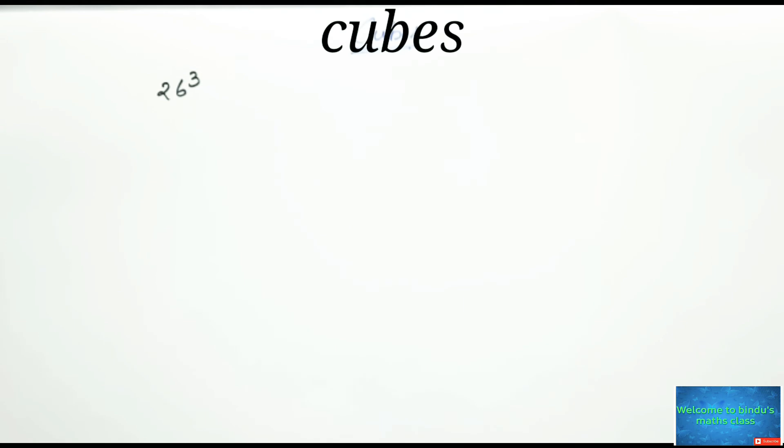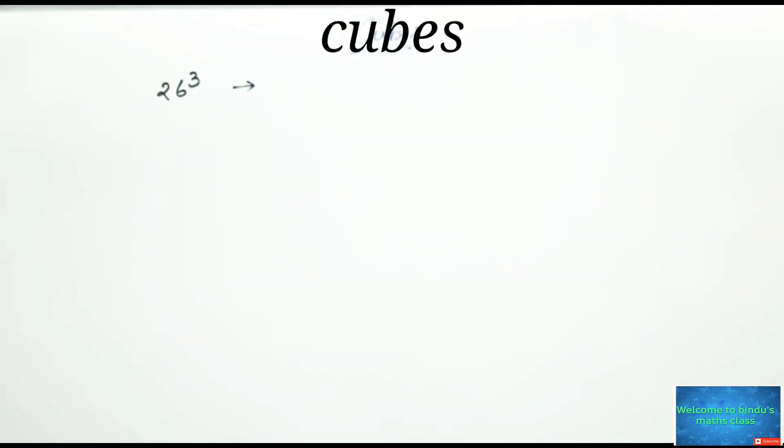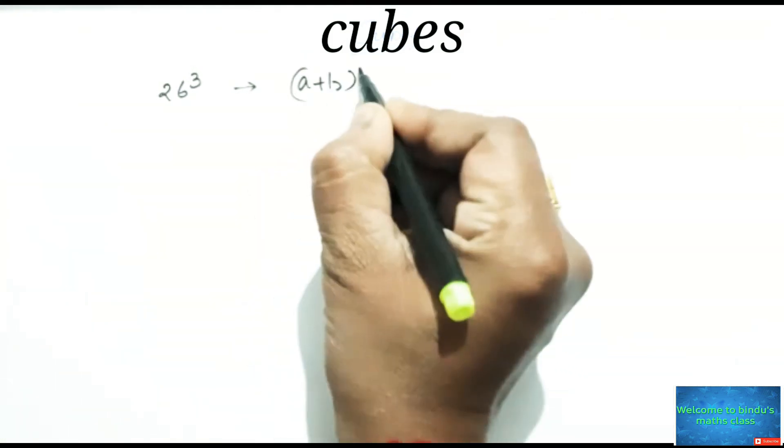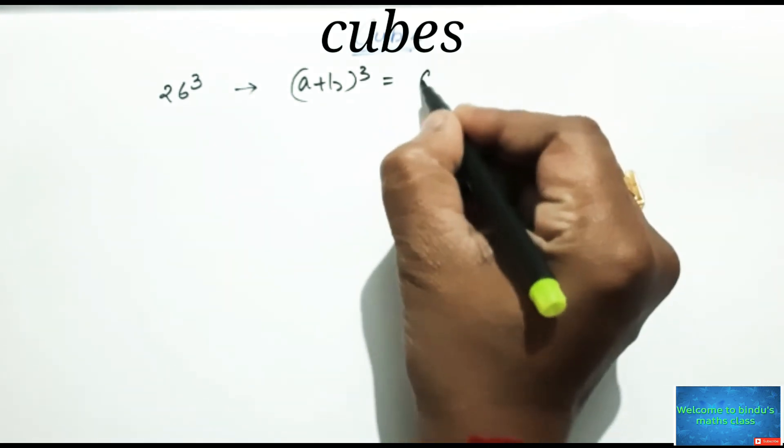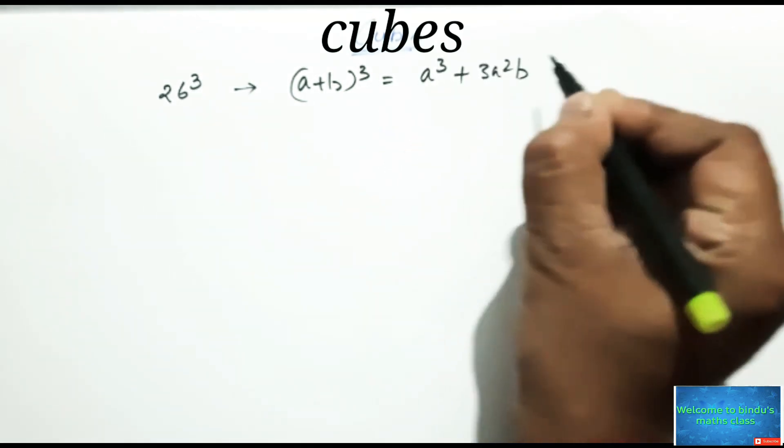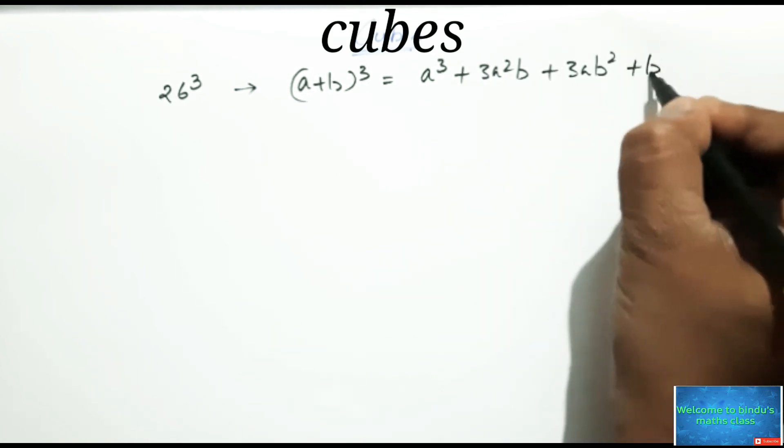I have a trick by using a plus b whole cube model. Actually what is a plus b whole cube? a plus b whole cube is equal to a³ + 3a²b + 3ab² + b³.